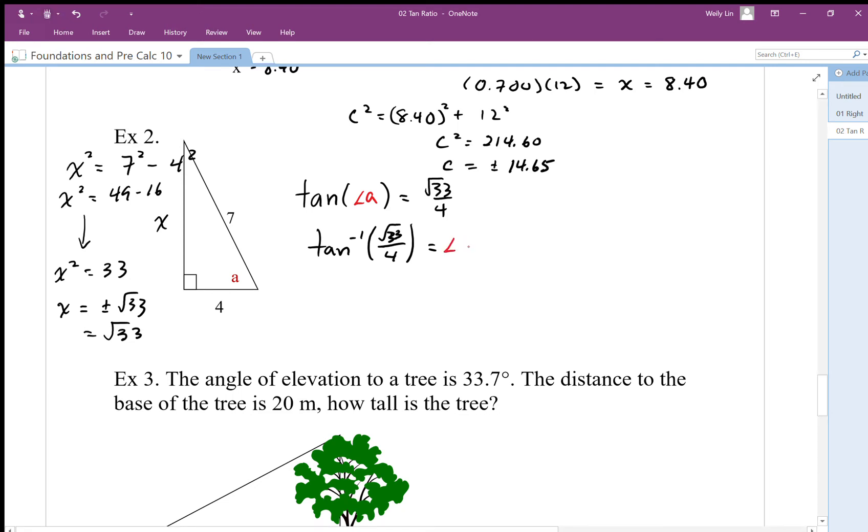So I use arc tan to find angles. I'm going to do second tan, square root 33 divided by 4, and I end up with angle A is equal to 55.15 degrees. I'm only going to keep two decimals for that angle.